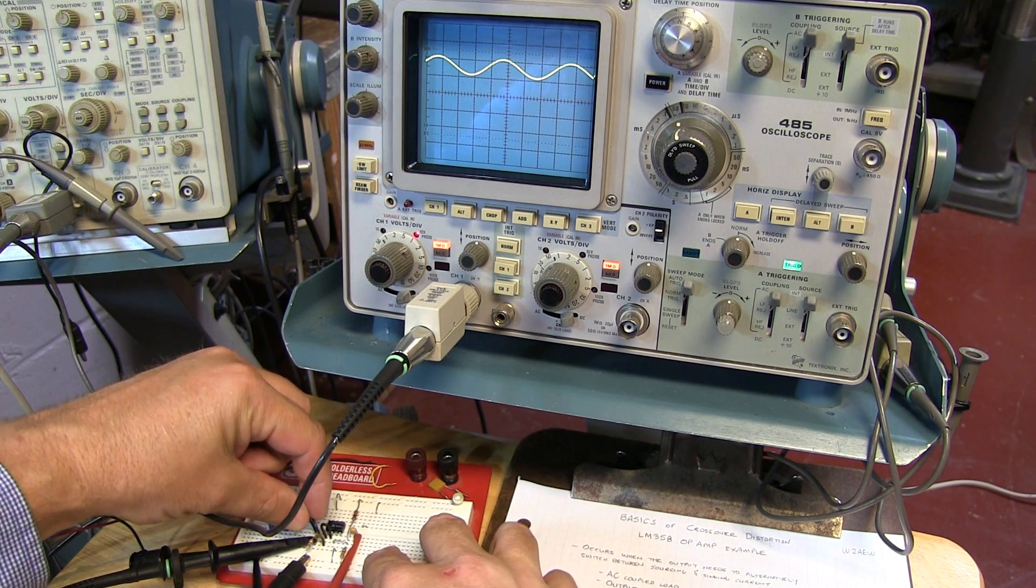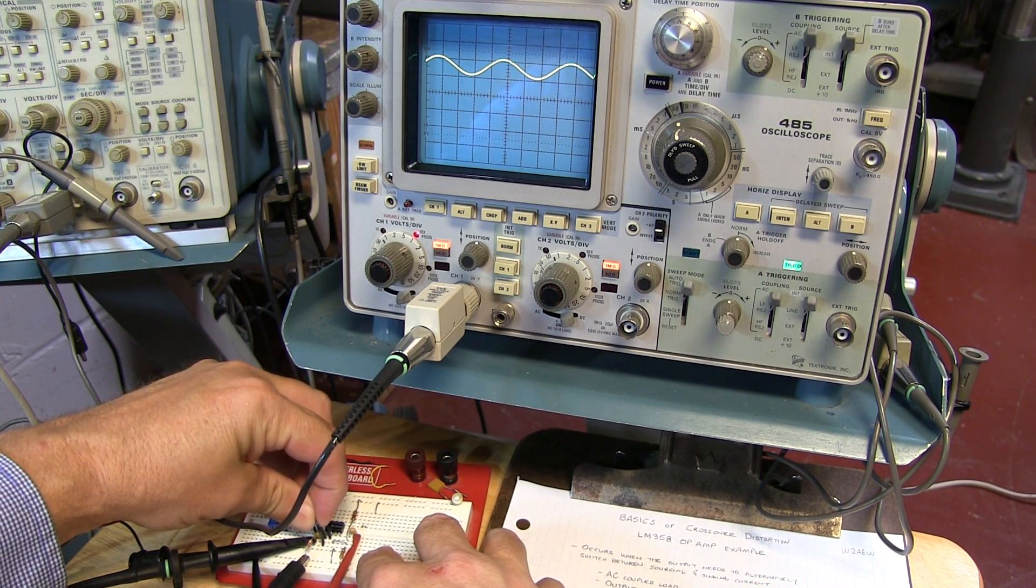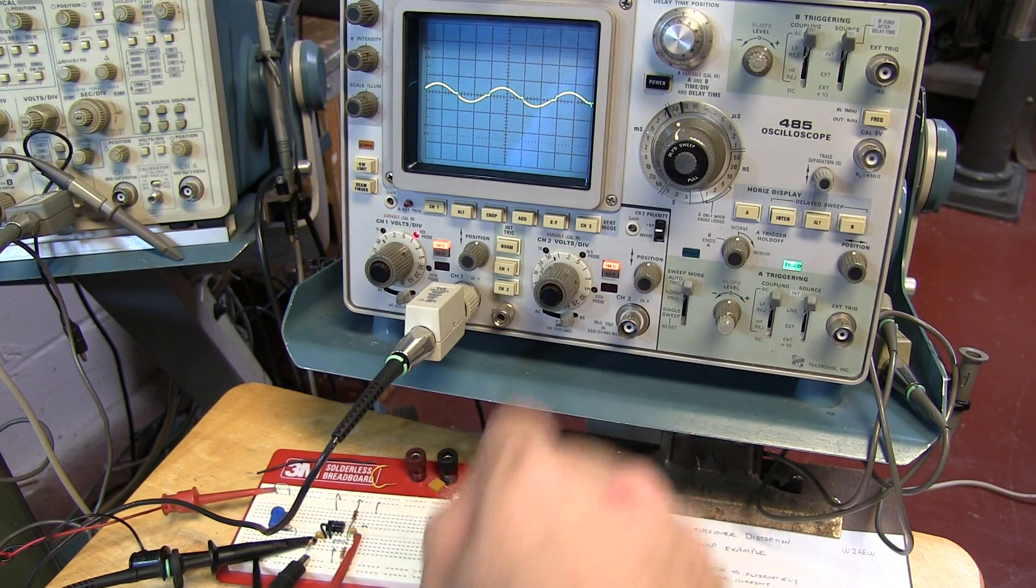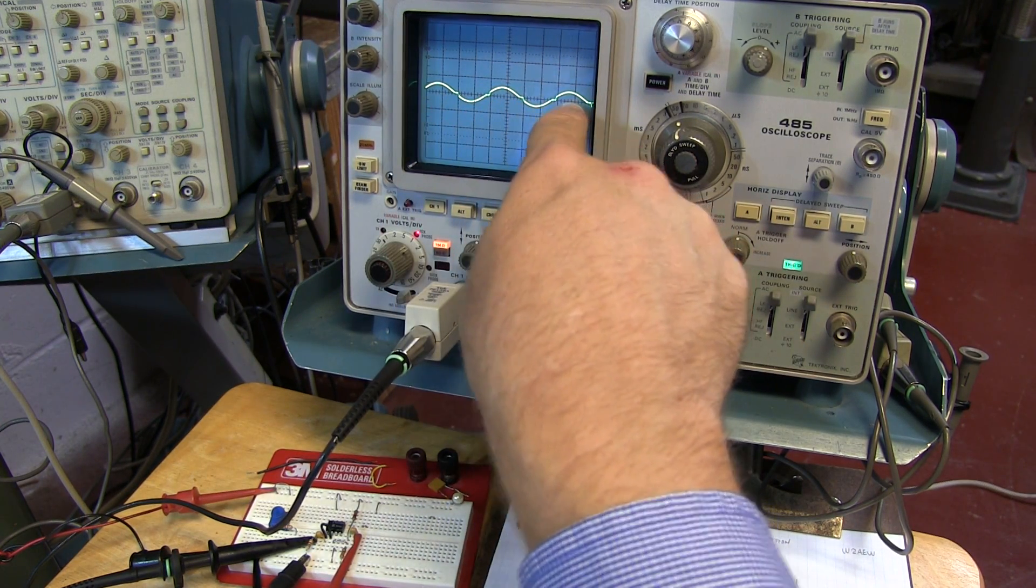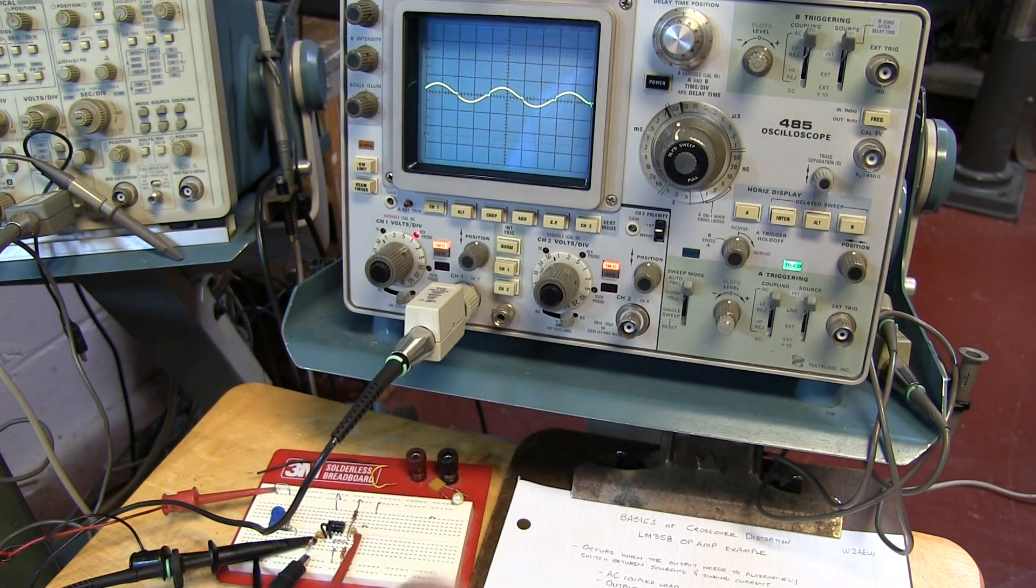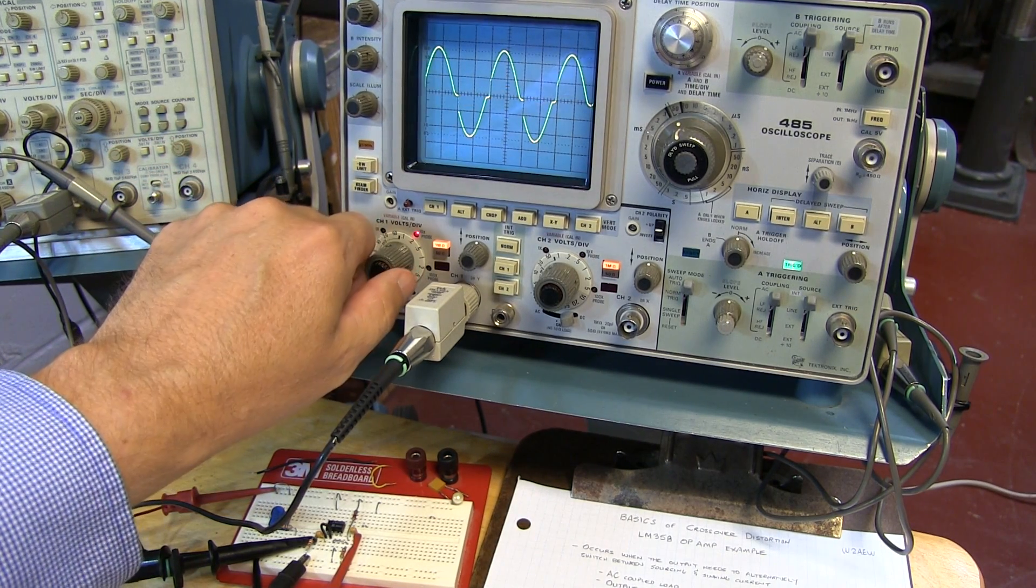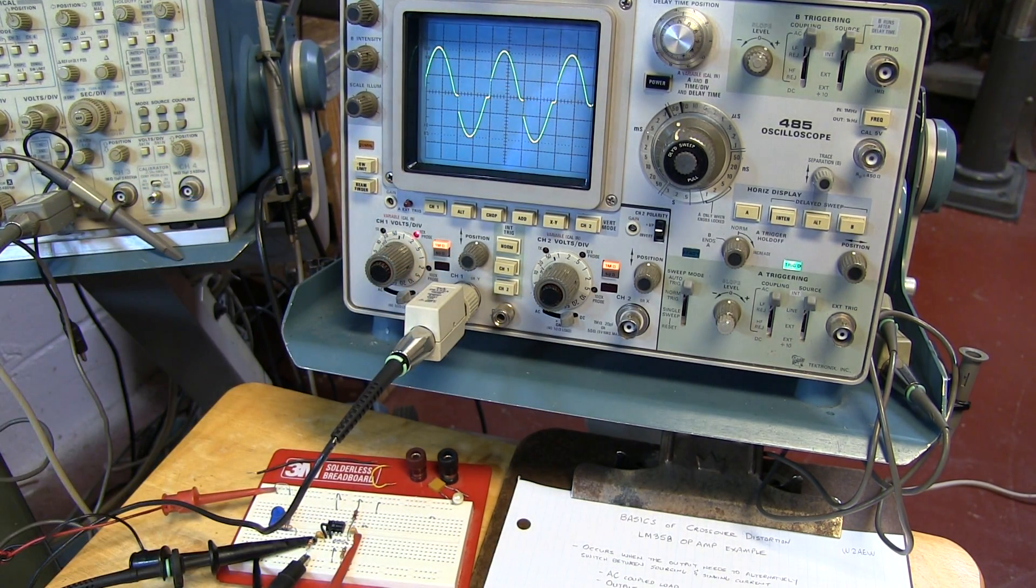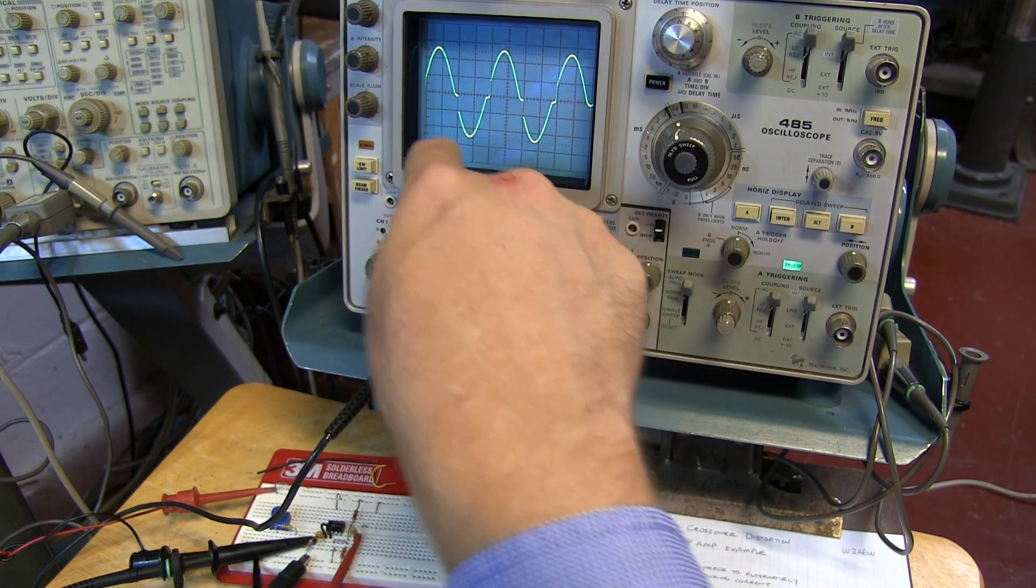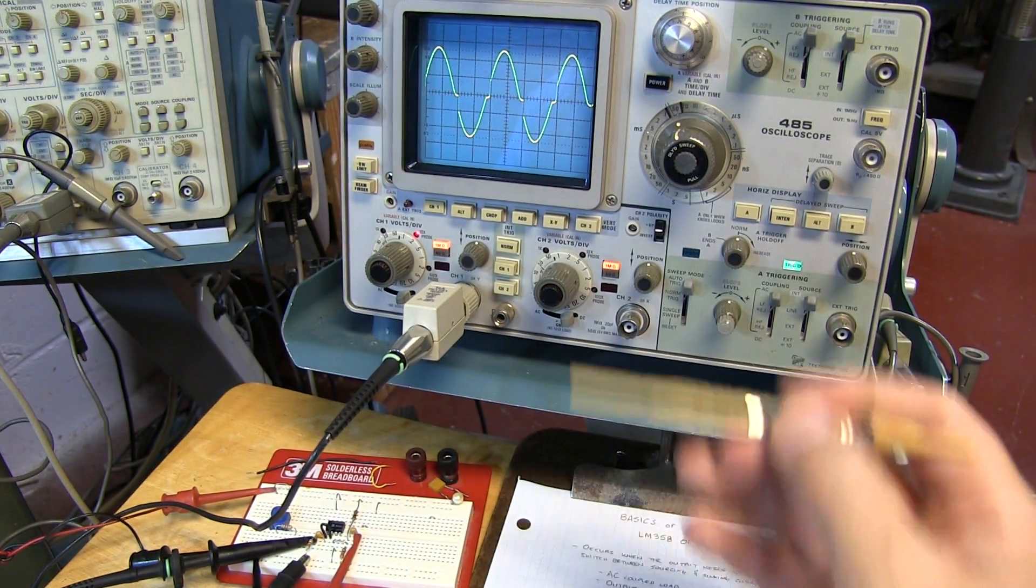Now if we pull the jumper that's going across the output stage capacitor, we can now see what that signal looks like, and we can see there's a little bit of distortion in there. Let's zoom in on that a little bit. At 200 millivolts per division here, we can actually see that crossover distortion occurring.